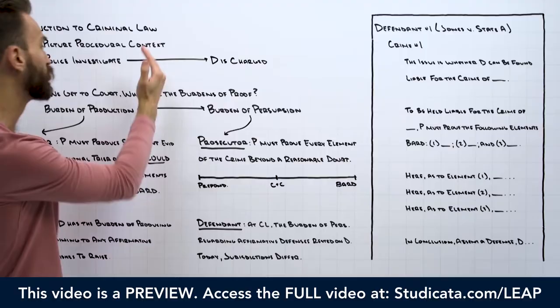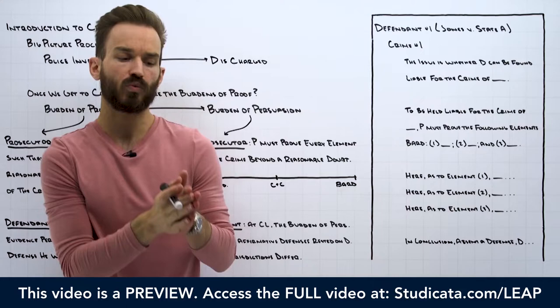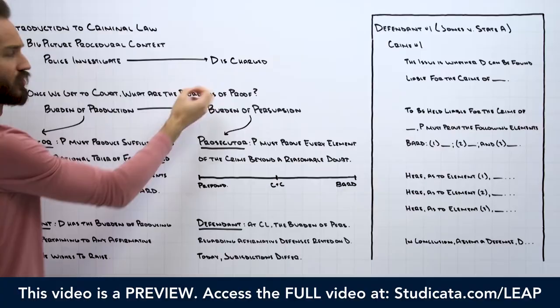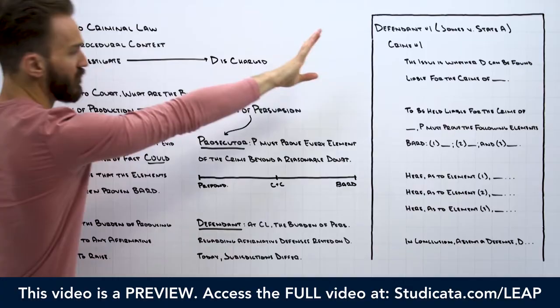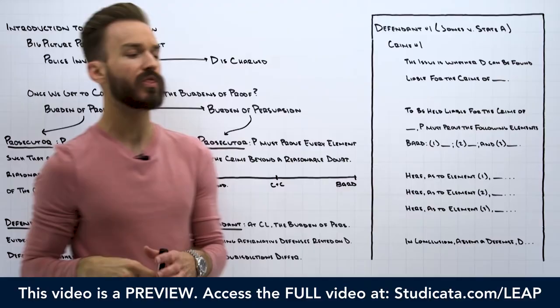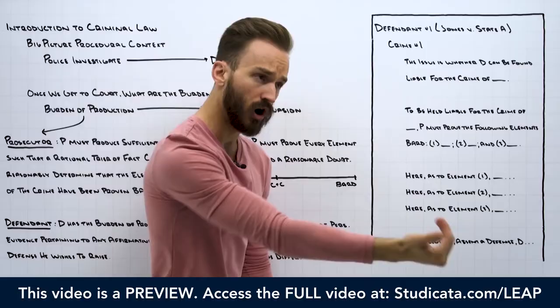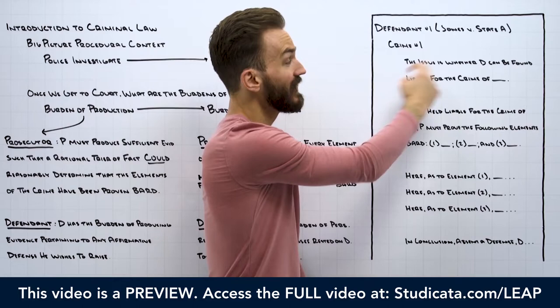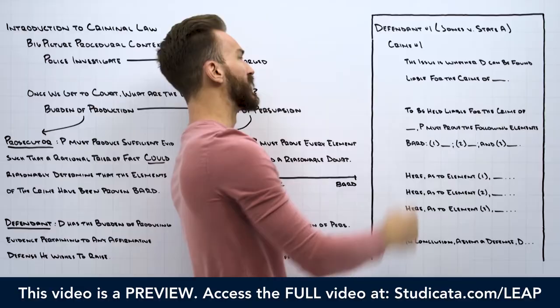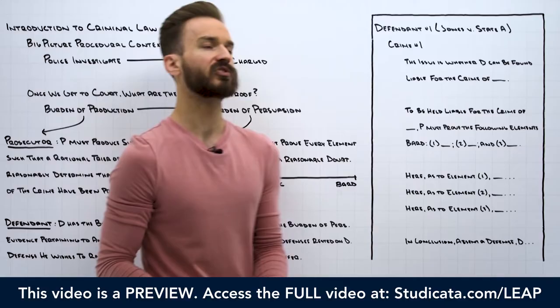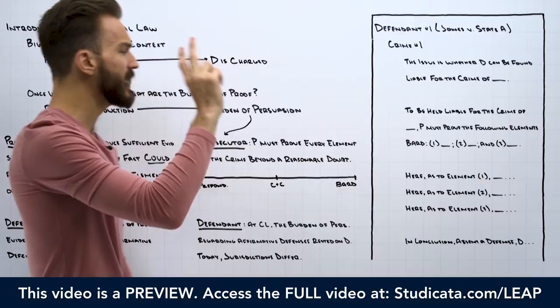In this course on criminal law, we're not going to focus on those criminal procedure issues. What we're going to focus on is once the investigation is completed and a defendant is actually charged with a crime. That's usually the stage we're in during criminal law fact patterns — actually in court, seeing whether or not a defendant can be convicted of a crime. We're past the investigative stage, moving to the point where the defendant is charged with a crime. Our ultimate issue is: once we get to court, can the defendant be found liable for the crime charged?